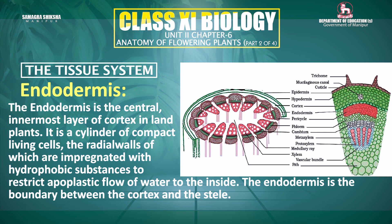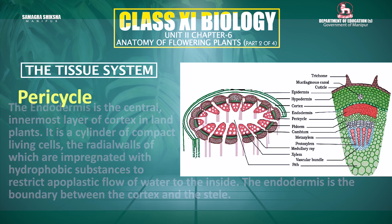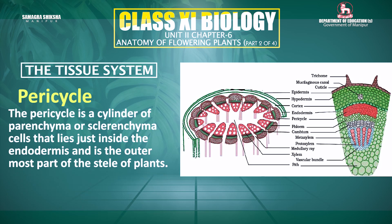These are called Casparian strips. The endodermis with Casparian strips prevents the backflow of minerals and helps maintain root pressure. After the endodermis comes the pericycle. The function of the pericycle includes lateral conduction of material and the origination of lateral roots.